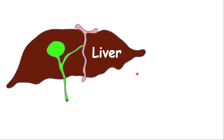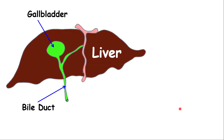Now let's look at the liver. The liver is a very important structure with many functions in the body, and it is also the largest internal organ of the body. Connected to or close to the liver is the gallbladder, which has a bile duct attached. The gallbladder is where bile is stored, and the bile duct transports bile from the gallbladder into the small intestine.